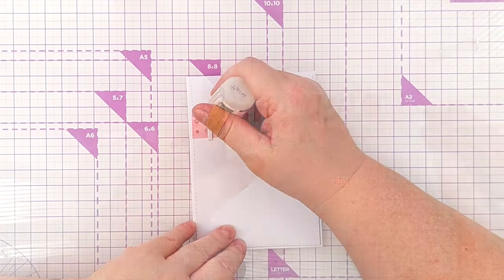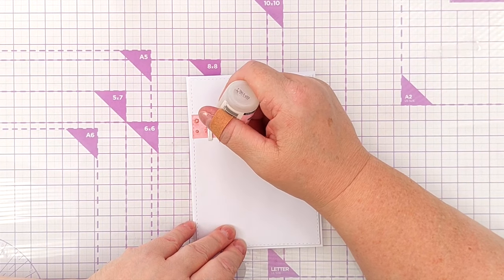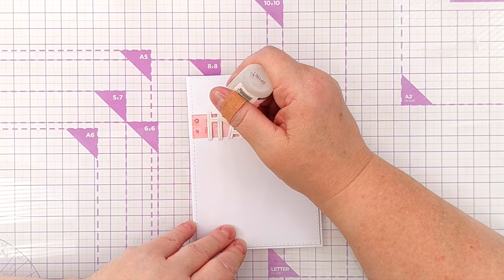As a finishing touch I'm adding glossy accents to my letters to make them look a little bit shiny and to give them a little bit more dimension and that is this card finished.